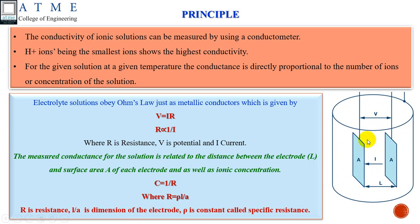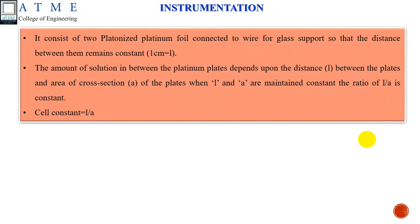If L and A are maintained constant — for example, electrodes kept one centimeter apart — we call it the cell constant. The conductivity cell has a cell constant. If we move on to the instrumentation part, it mainly consists of a conductivity cell with two platinum foils supported with glass for mechanical support, kept at a distance of one centimeter apart. The conductance depends on the ions present between the two platinum foils. With L and A kept constant, the cell constant K = L/A.